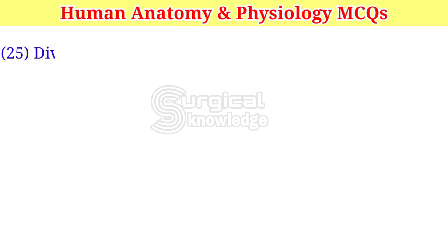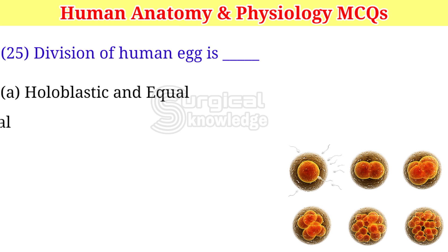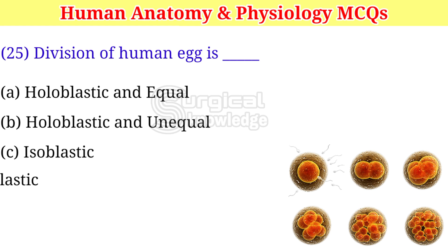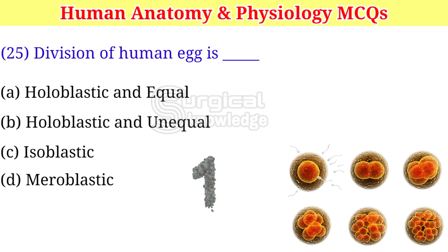Division of the human egg is: A. Holoblastic and equal. B. Holoblastic and unequal. C. Isoblastic. Right answer is holoblastic and unequal.